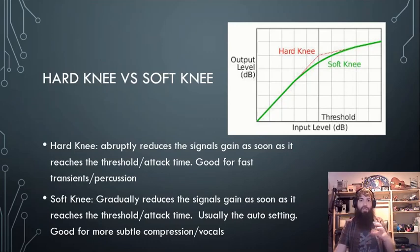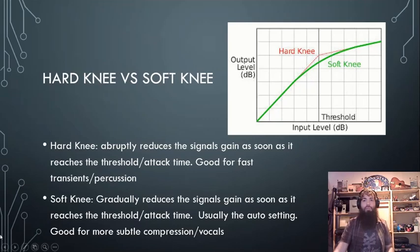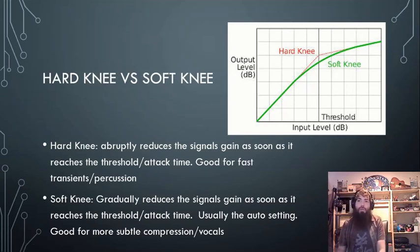With a soft knee, the compressor actually starts to compress a little bit before it reaches the threshold, giving a smoother compression. It's usually the auto setting and starts to gradually reduce signal gain as it approaches the threshold.